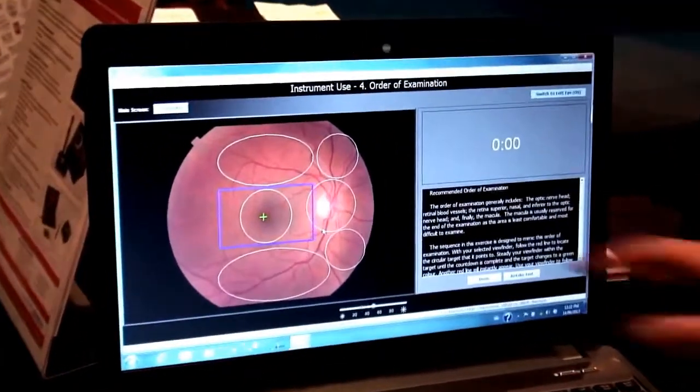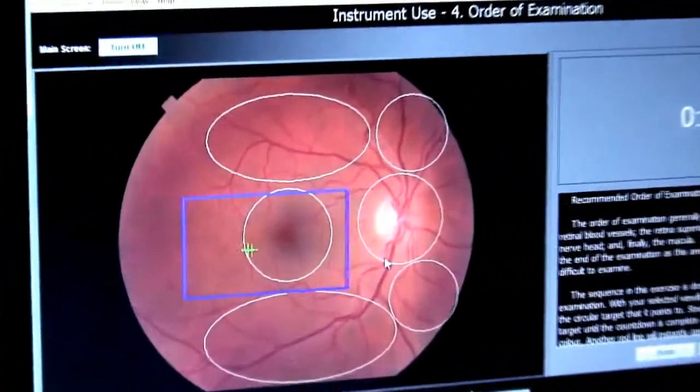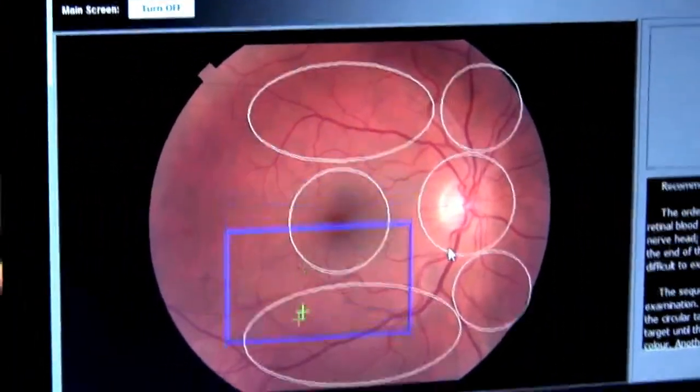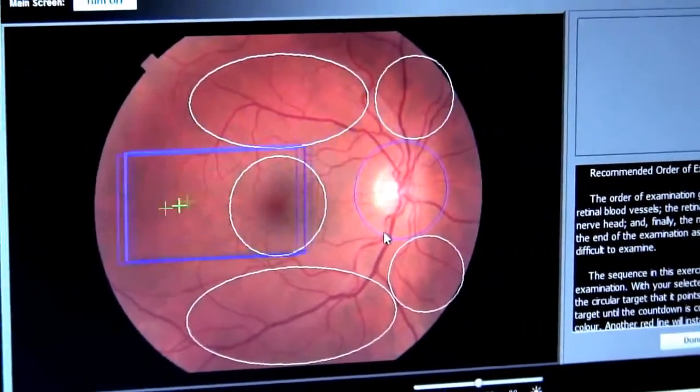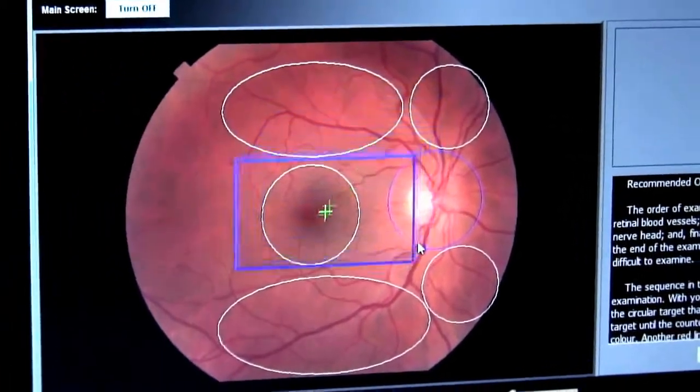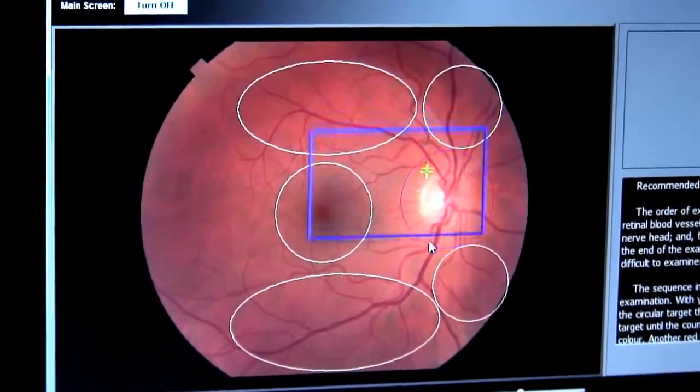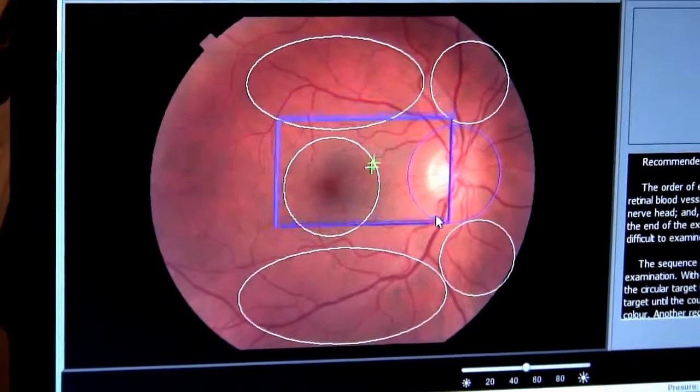So for example, this blue square here is the field of view for the student. As a student navigates and looks around the eye, the movements are tracked and are actually seen within the Opthosim unit.